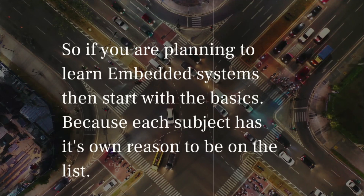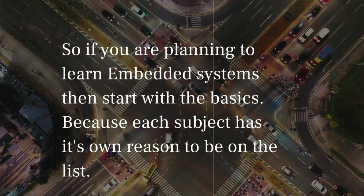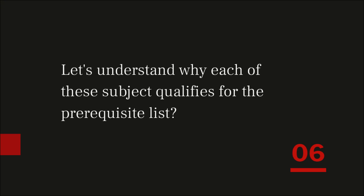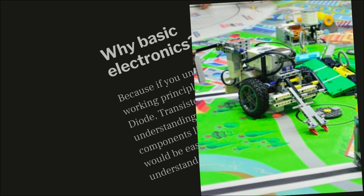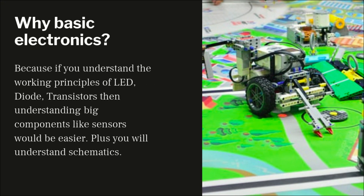Each of these subjects has its own reason to be on the list. Let's talk about why Basic Electronics is included. Basic Electronics is a subject where you will learn about the small components that make up a large part of electronics — you will learn about diodes, LEDs, transistors, and various other components. These components will help you in the long run because you will understand how things work, the difference between digital and analog, what kind of sensors you're using, and you will also understand schematics.